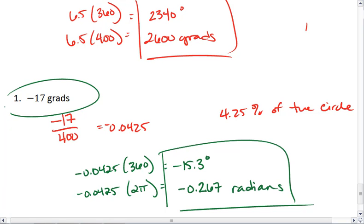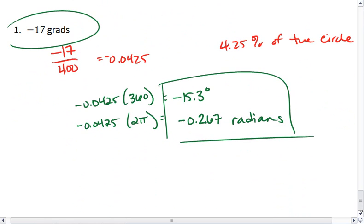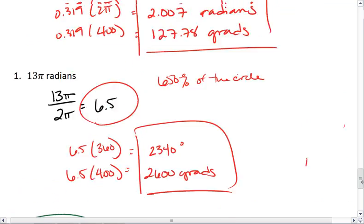So hopefully that has helped you to understand exactly what radians are. Radians refer to how much of a radius has been cut off in the arc length, and also give you some familiarity with converting between radians, degrees, and even grads.